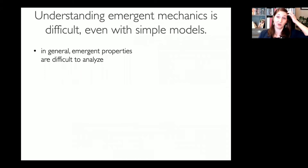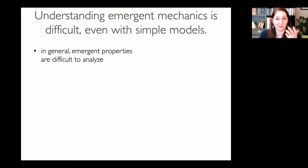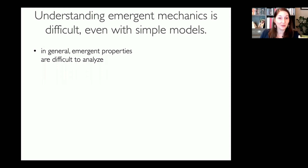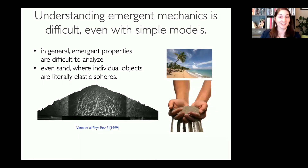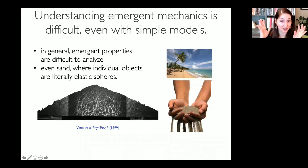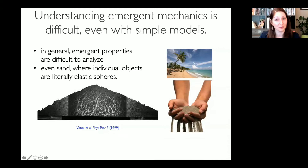Individual cells and collagen fibers are already extremely complicated objects. But understanding emergent mechanics is difficult even when the underlying objects are incredibly simple. My favorite example is sand — if you take a pile of truly elastic discs that are birefringent, you can see the force chains set up inside, and it's very difficult to predict this emergent complicated behavior even though the underlying constituents are trivial.